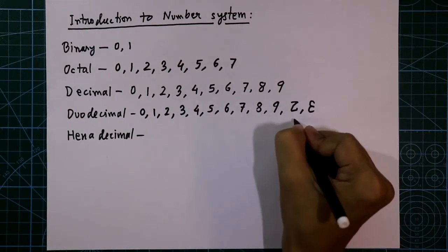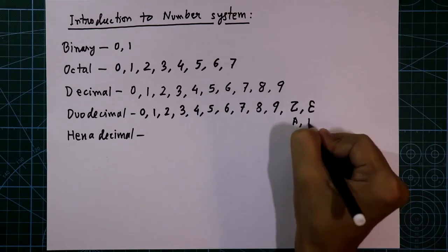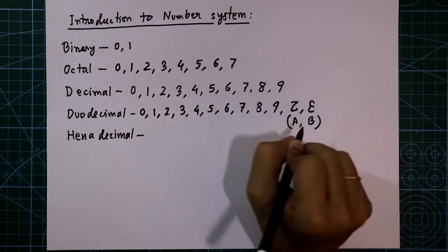Sometimes, inverted 2 is written as A and inverted 3 is written as B.